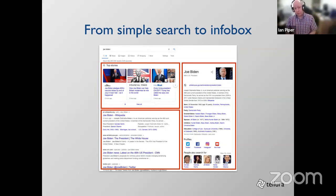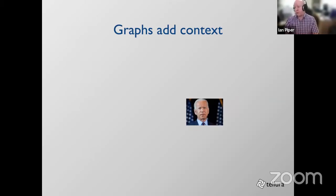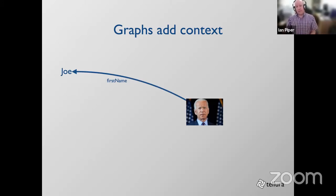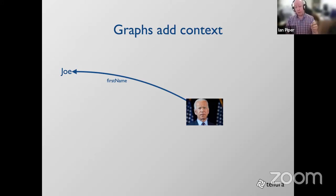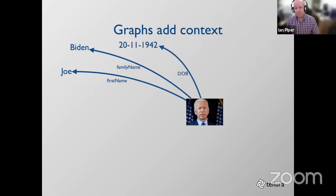Let me take that information and redraw it as we would if building a knowledge graph. We have an image representing a person object — a proxy for a real person, Joe Biden. In a knowledge graph we would say there are data properties associated with that entity. The first name is a string of text 'Joe,' but we've provided a meaningful link between the person object and this piece of data — we've said it's a first name, removing ambiguity. We can add family name, date of birth, and later ask questions like 'show me all people born on that day.'